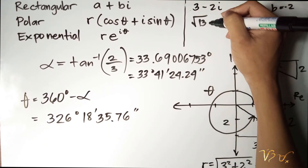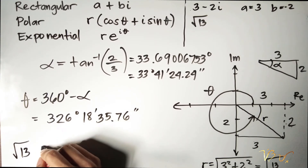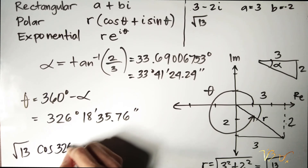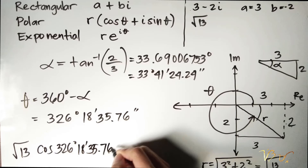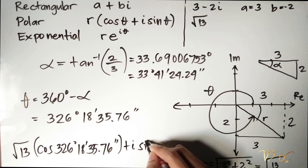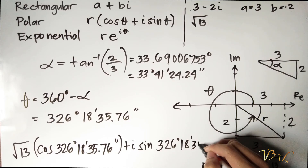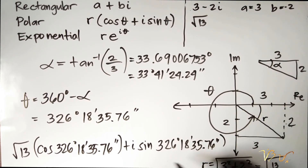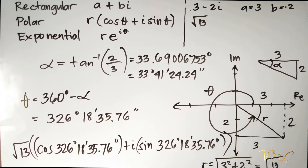Let's write the polar form: square root of 13 times (cosine 326 degrees 18 minutes 35.76 seconds plus i sine 326 degrees 18 minutes 35.76 seconds). This is our polar form of 3 minus 2i.